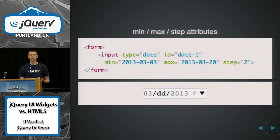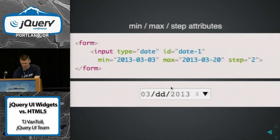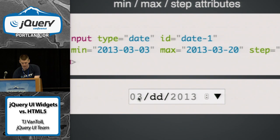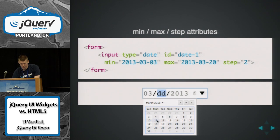You get some integration into other native features. This is a date picker using the min, max, and step attributes. The way Chrome implements this, I've picked two dates between March 3rd and March 20th, and Chrome actually won't let me change the month or the year — it'll only let me change the day. And with the step attribute, it'll only allow me to pick every other day.